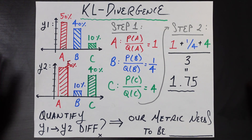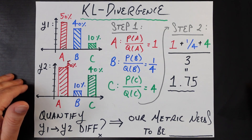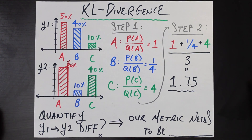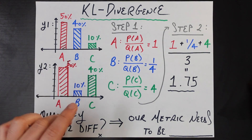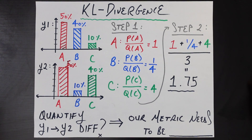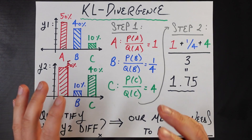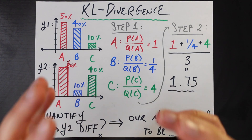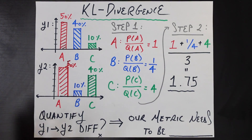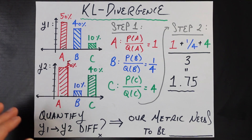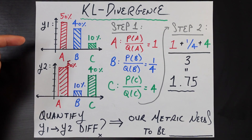Let's focus on two back-to-back years. In year one, 50% of students liked apples, 40% bananas, and 10% clementines. In year two, it's still 50% apples, but the other two swapped: 10% liked bananas and 40% liked clementines. The question is: can you give me a single number that quantifies how much changed from year one to year two — how different is the year two distribution relative to year one?